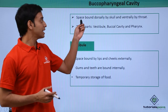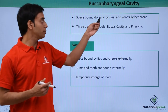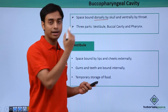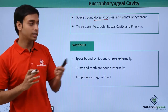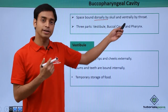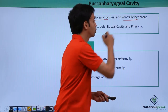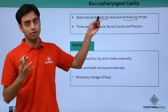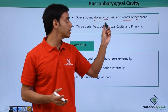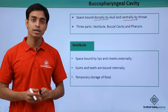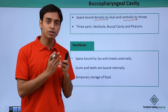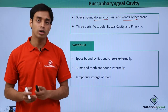The buccopharyngeal cavity is the space which is dorsally bound by the skull — that is, from the back it is covered by the skull — and ventrally, that is from the front, it is covered by the throat. So this area, dorsally covered by the skull and ventrally by the throat, is known as the buccopharyngeal cavity.